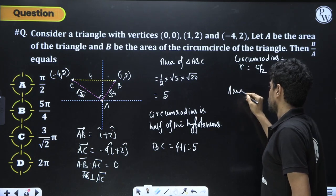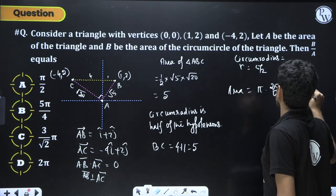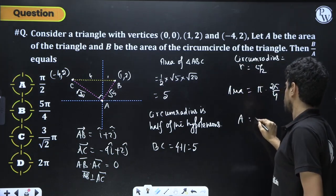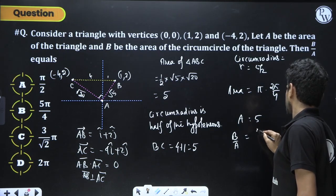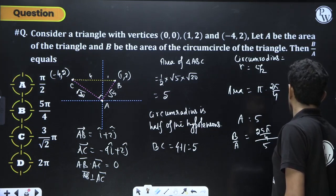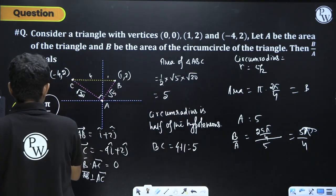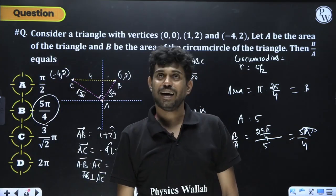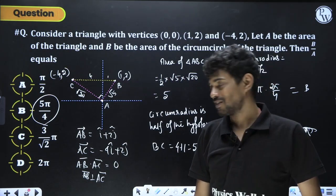For a right-angled triangle, the circumradius equals half the hypotenuse. The hypotenuse is AB: from (1,2) to (-4,2), the distance is 5. So circumradius R = 5/2. Area of circumcircle B = πR² = π(25/4). Therefore B/A = (25π/4)/5 = 5π/4.